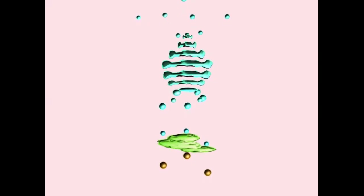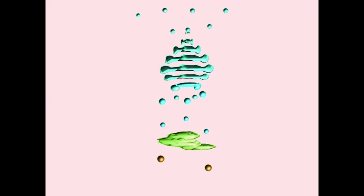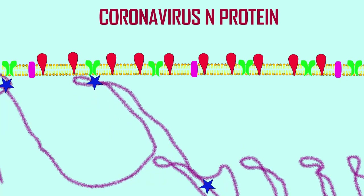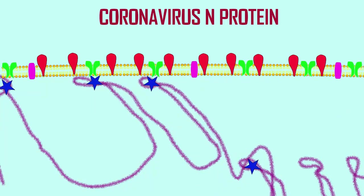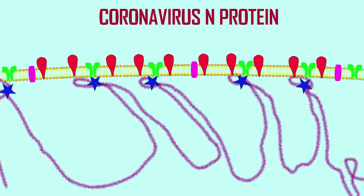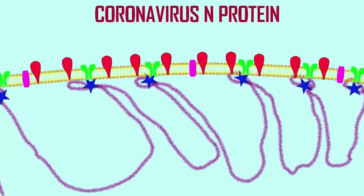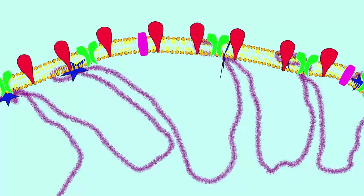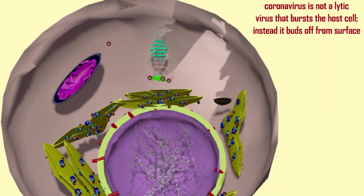The N protein, which attaches to the viral RNA, then attaches to the M protein, which is part of this membrane, and together they form an envelope around the viral RNA. This then becomes a new viral particle. While many viruses are lytic viruses which cause cells to burst releasing all the virions inside, a coronavirus buds from cells one at a time.